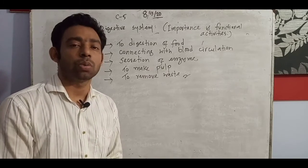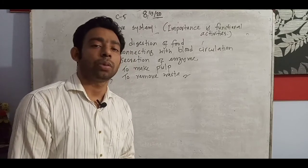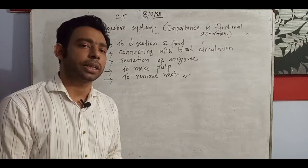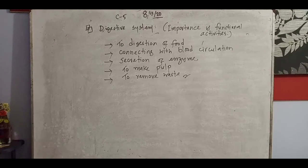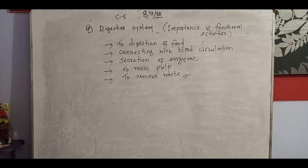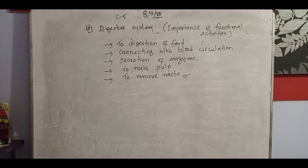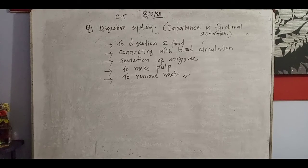In the next class, we will discuss the alimentary canal in full detail. Till then, everyone stay connected. A student is asking what pulp is — it is the paste or mash formed in the stomach and intestine when food is covered with saliva. If you missed it, do join the next class. Thank you everyone, take care of your health. Allah Hafiz.